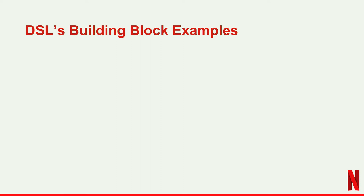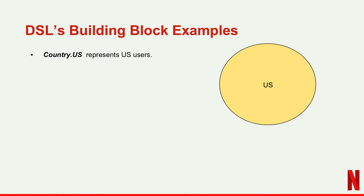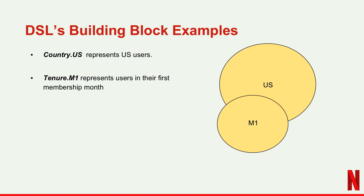As I mentioned, we have a domain-specific language, so I'll be showing some examples of the building blocks used to build the queries that are part of the DSL. Country is a case class, and within that there is a specific object called country.us, which represents the universe of all users who are from the US — visualizable as a circle in a Venn diagram. Tenure.m1 refers to all users who are in the first one month of membership, and it overlaps with the country circle in Venn diagram space.